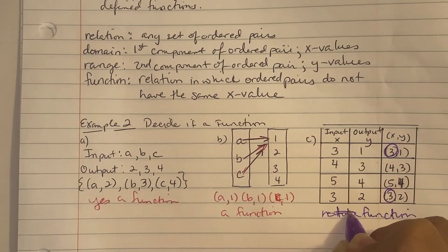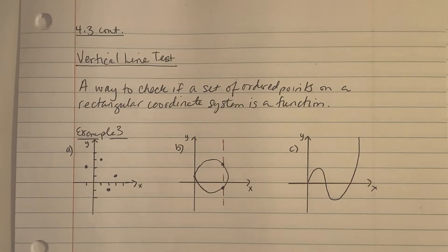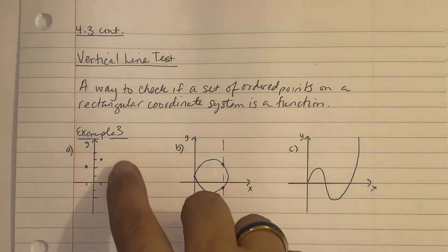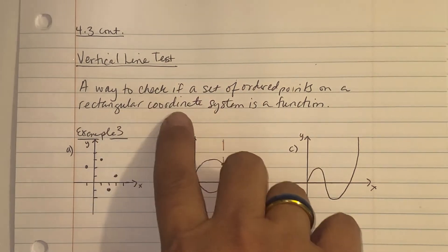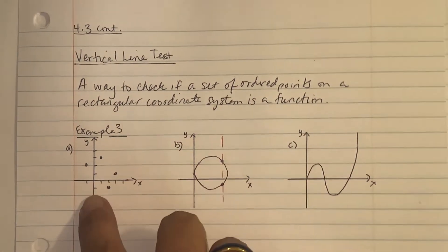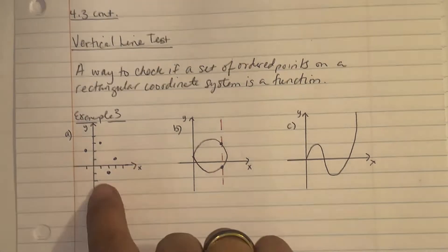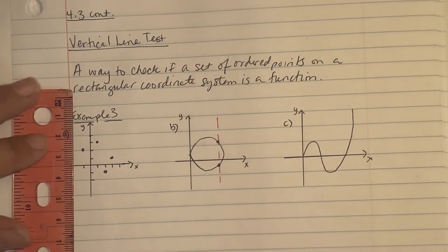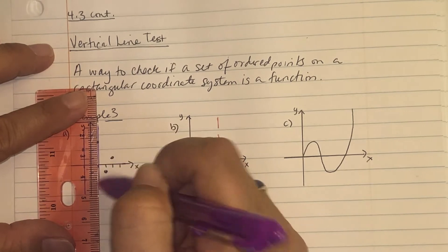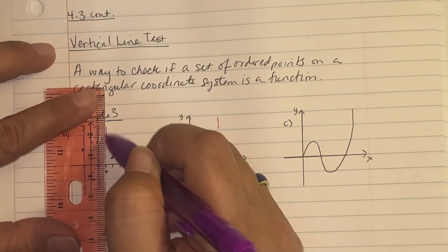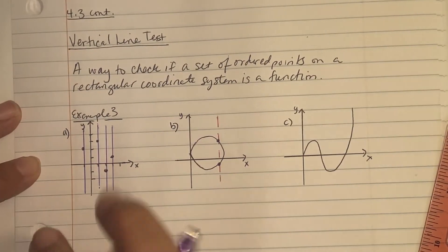Which means that this would not pass the vertical line test. The vertical line test is a way to check if a set of ordered points on a rectangular coordinate system is a function. In example 3, they gave us three plotted points. To know if it is a function, you take a straight edge and draw vertical lines down your paper. If your vertical line does not hit a point in more than one location, it passes the vertical line test — so this is a function.